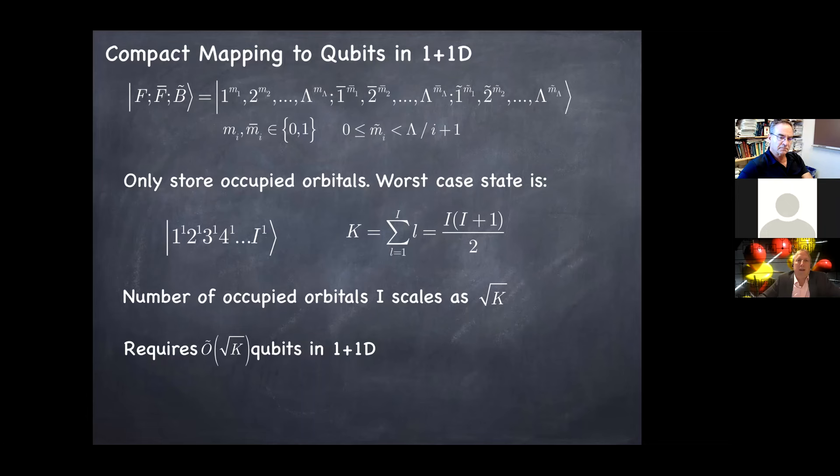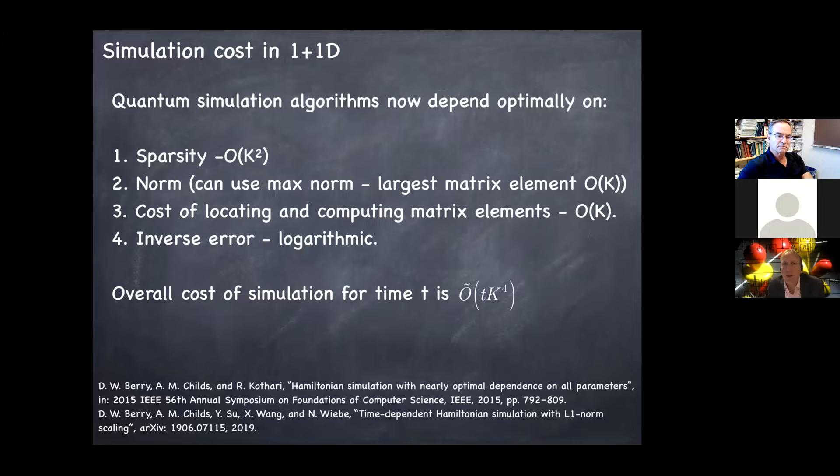And so if I count these up, k has to be the sum of all these indices up to I. So k goes like I squared. That means the maximum number of occupied orbitals that I have goes like the square root of k. So that's rather nice. So it goes sublinearly in k in 1+1D. Now that's counting my qubits. What about counting my gates? Well, the great thing about the light front that I'm just extolling the virtues of light front here, but the important thing from the point of view of counting gates is that the Hamiltonian in this basis is sparse, meaning that the number of non-zero matrix elements in the Hamiltonian for fixed k grows like k squared.